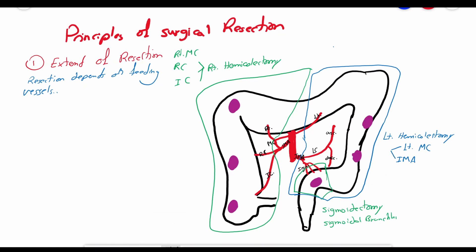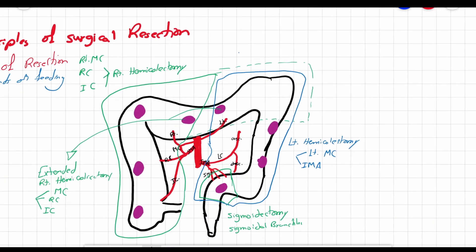In tumors of the transverse colon, an extended right hemicolectomy is performed, which follows the same resection requirements of the right hemicolectomy, in addition to removal of the whole transverse colon and splenic flexure, along with the left branch of the middle colic artery.